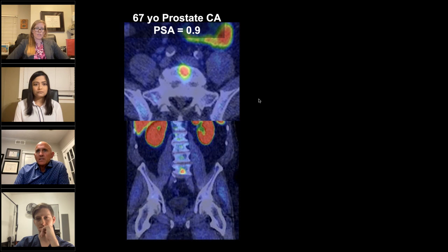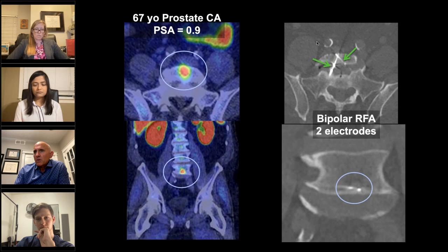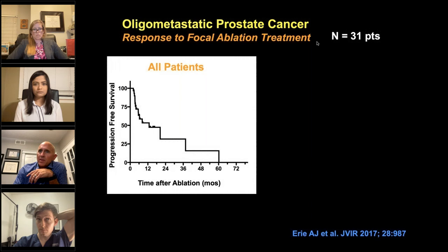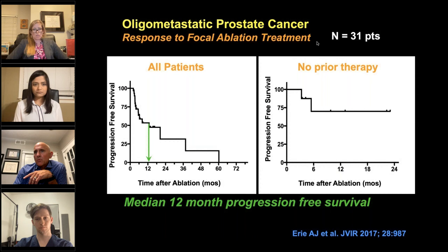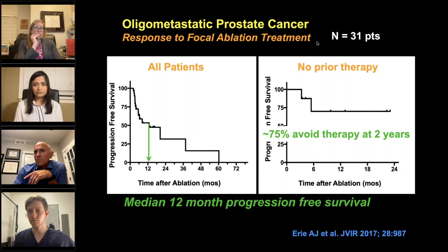Here's one example in the spine: a 67-year-old with prostate cancer and a lesion at the inferior aspect of L5. This was treated with a bipolar RF system using a transpedicular approach with two electrodes, and the patient did extremely well in terms of local control. We looked at patients with oligometastatic prostate cancer — you wouldn't think treating prostate cancer in bone would help, but patients did well in terms of progression, with 12-month progression-free survival for all patients. For those who had not had androgen deprivation therapy, 75% didn't need any further therapy at two years — really important for their quality of life.